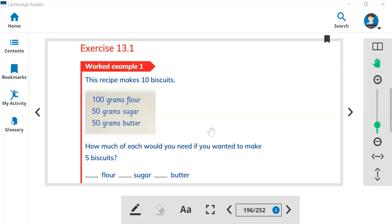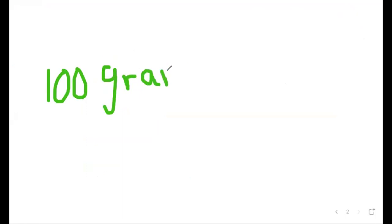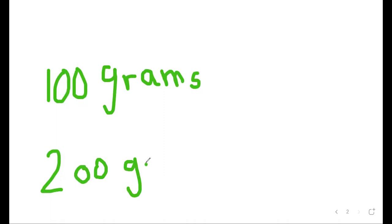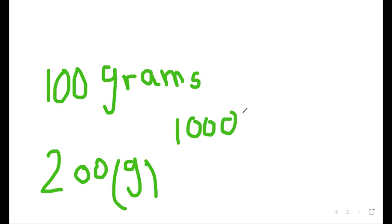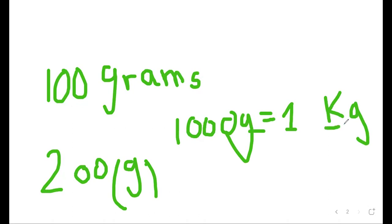Let's summarize today's class. We started from exercise 13.1 and learned about grams and kilograms. We have 100 grams, then 200 grams. When we got 1000 grams, that means there is one kilogram. K stands for kilo and G stands for grams.